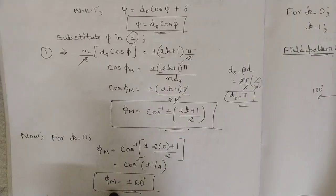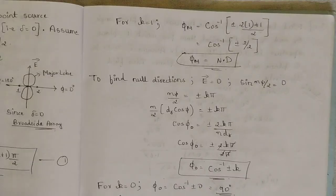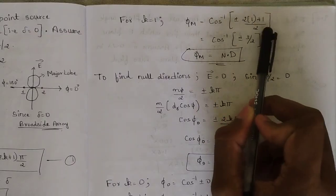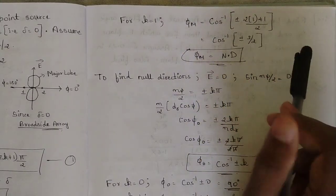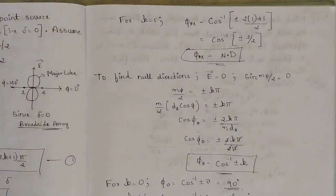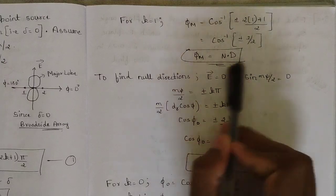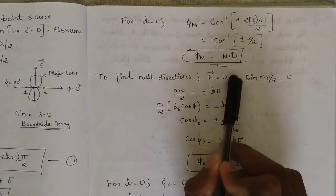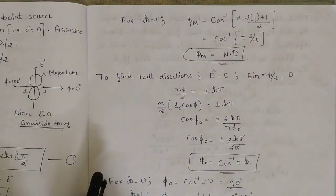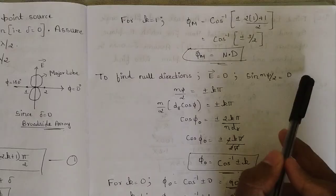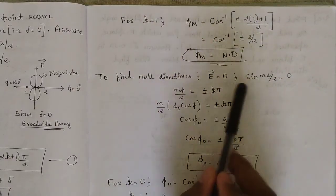For k = 0: φ_m = cos⁻¹(±(2·0+1)/2) = cos⁻¹(±1/2) = ±60°. For k = 1: φ_m = cos⁻¹(±(2·1+1)/2) = cos⁻¹(±3/2), which is not defined. Now to find the null directions, we set E = 0, so sin(nψ/2) = 0, giving the condition nψ/2 = ±kπ.